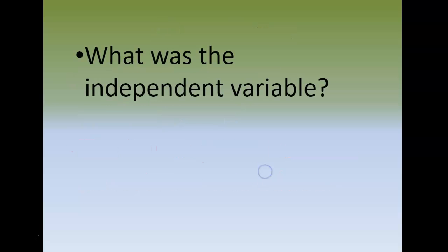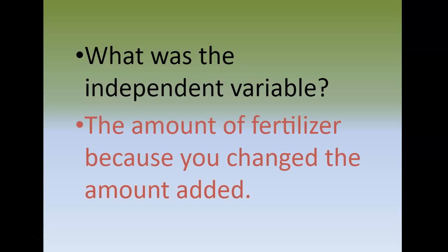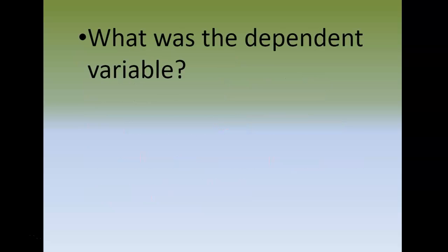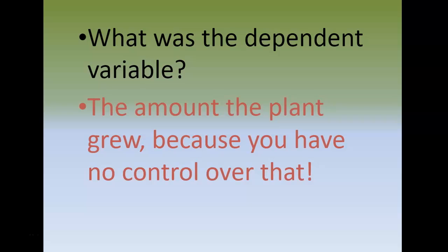What was the independent variable in this experiment? Take a second and think about it. If you said the amount of fertilizer, you are correct, because the fertilizer determines the change in height. And what was the dependent variable — which variable changed based on the other variables? The answer is the amount the plants grew, because you can't control that; it changes based on the actual amount of fertilizer. Okay, that's the scientific method in 11 minutes. Thank you.